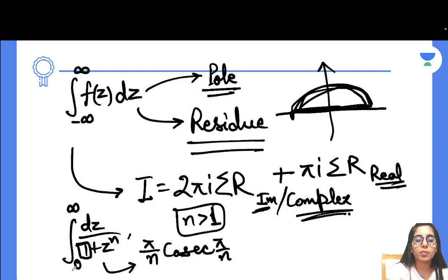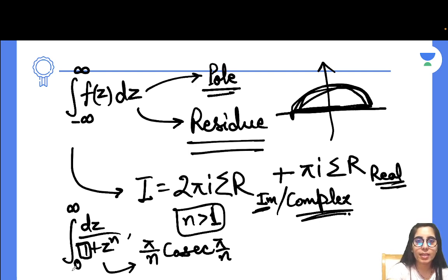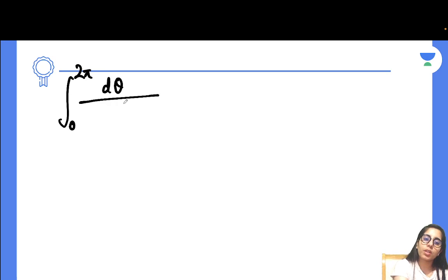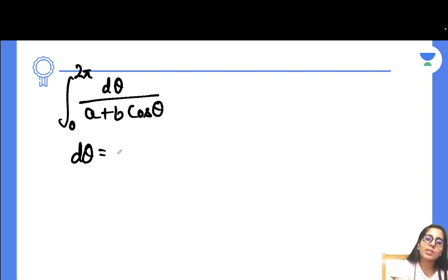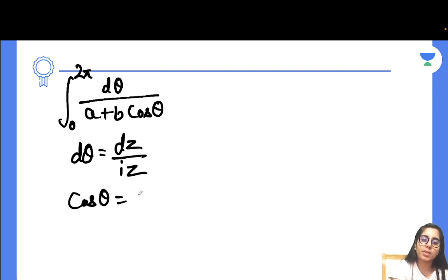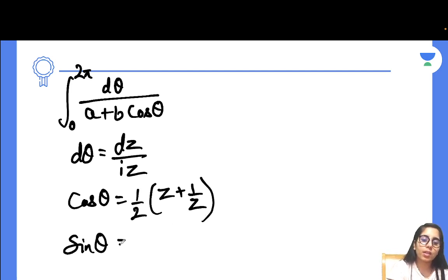The other form you need to know is: integration from 0 to 2π of dθ over (a + b·cosθ). To handle this, convert it to an integration over a contour C of F(z)dz. Replace dθ with dz/(iz), and replace cosθ with (1/2)(z + 1/z). If you have sinθ in the denominator instead of cosθ, replace it with (1/(2i))(z − 1/z).